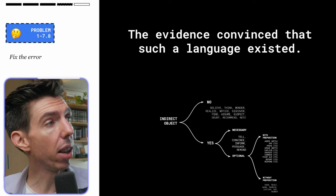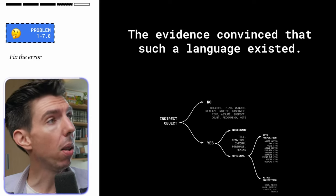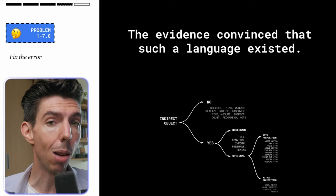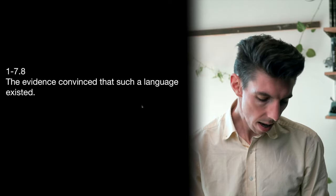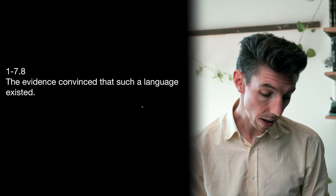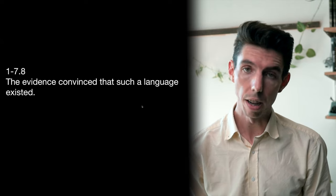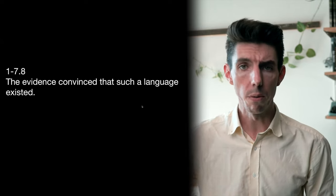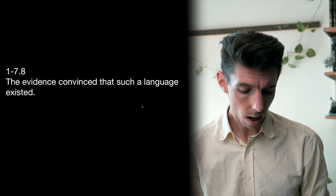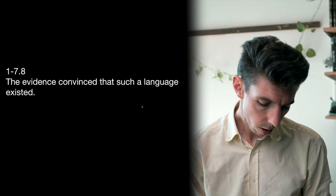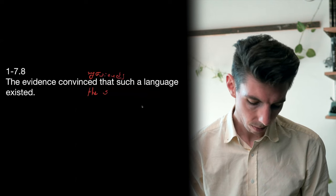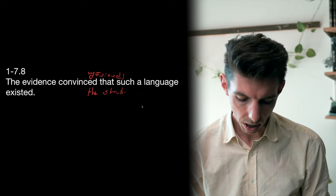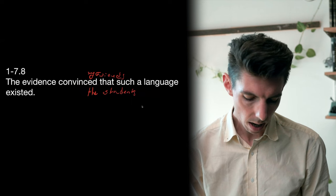Here's another practice question. 'The evidence convinced that...' — 'convince' is one of those verbs that must take an indirect object. You can't just go around convincing; you have to convince a person of something. So it could be 'convinced my friends,' 'convinced the students' — you can convince anybody you want, but there must be an indirect object.